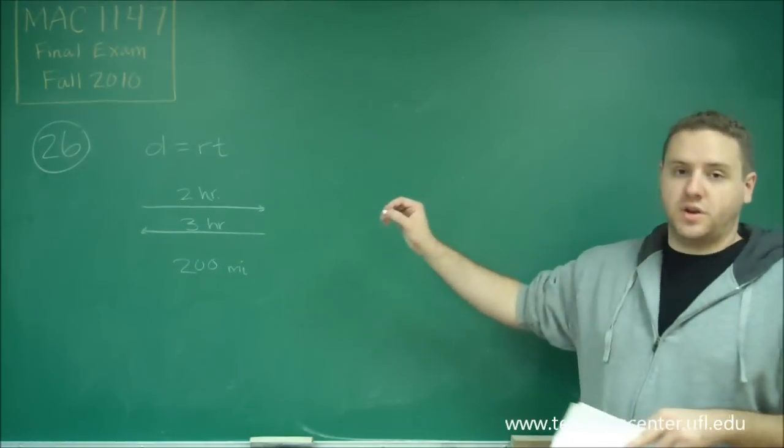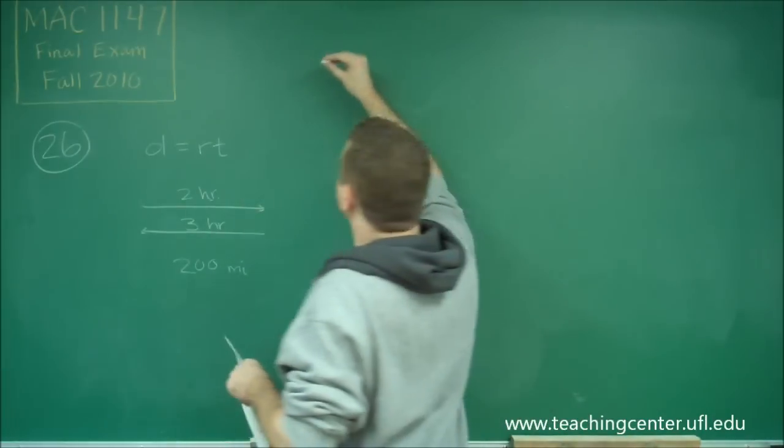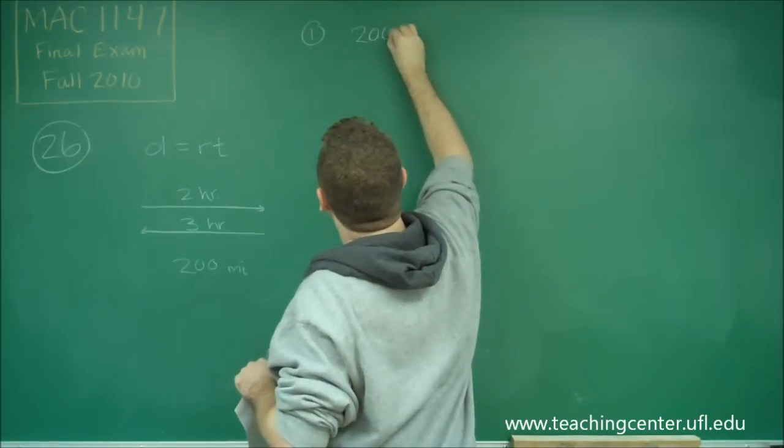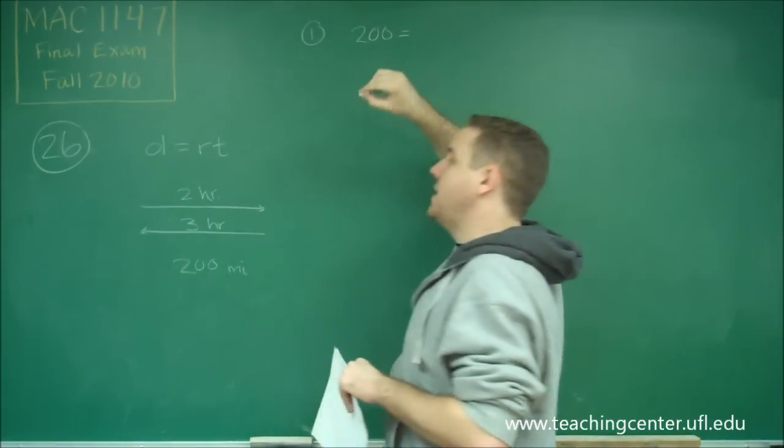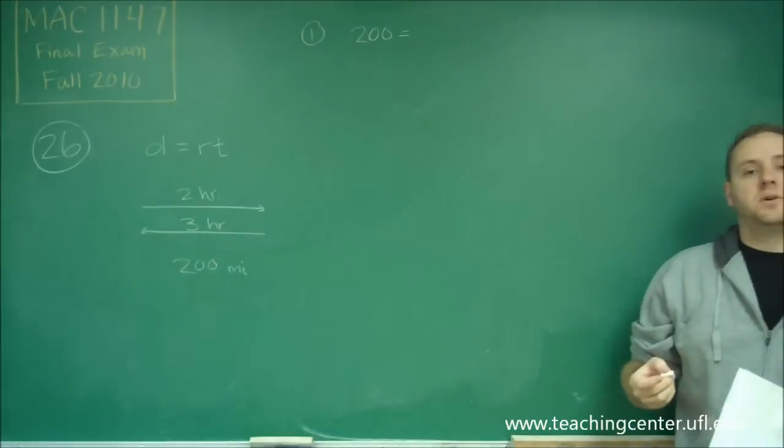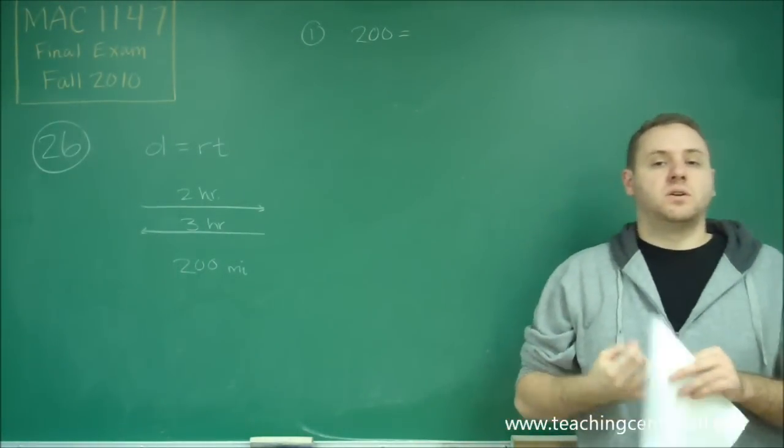So we know that for the first trip, using D equals RT, so for trip one, the D is 200. So our rate. So here's where our variables come in. There's two things that we don't know. We don't know the speed of the boat, and we don't know the speed of the current.